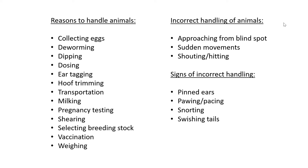On the right side, they talk about the incorrect handling of an animal. Here are three main things. The first is do not approach animals from the blind spot. We talked about this last time — the main reason is that the animal sees you suddenly, gets startled, and runs away. If they don't run away, they will actually turn on you and may want to hurt you in defense.